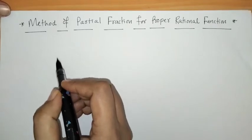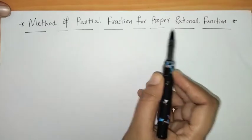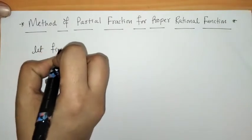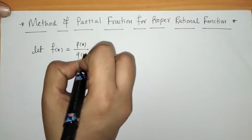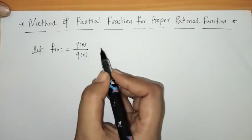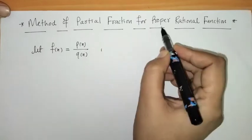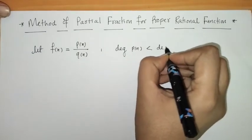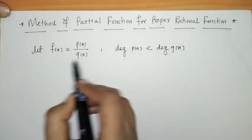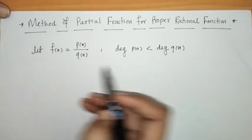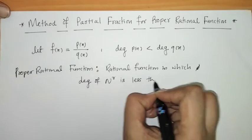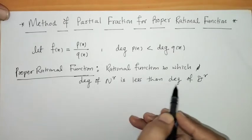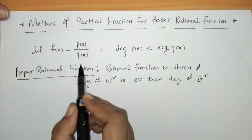Hello everyone, welcome to Unlock Maths. Today we have to discuss the method of partial fractions for proper rational functions. Let us consider f(x) = p(x)/q(x), where p(x) and q(x) are both polynomials. This function is called a proper rational function when the degree of p(x) is less than the degree of q(x). Otherwise, it is called an improper rational function.